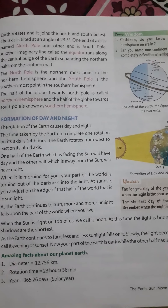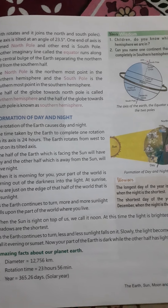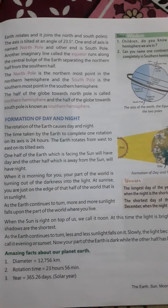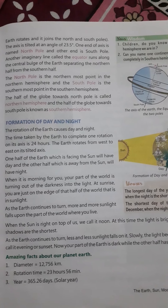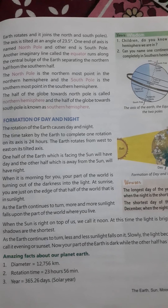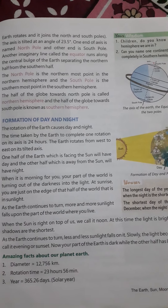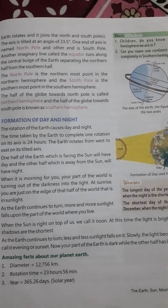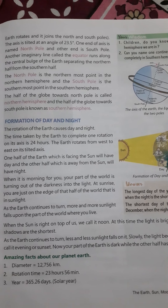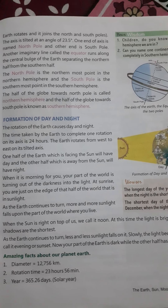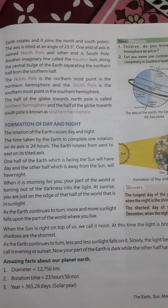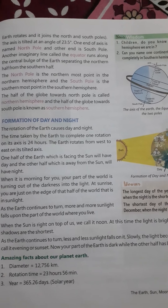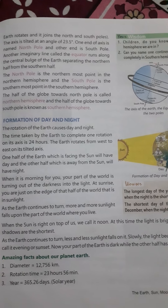We all know that in a day we have a total of 24 hours — that we already know. Basically, the day and night are caused due to the rotation of Earth. As I told you earlier, the Earth rotates on its axis.